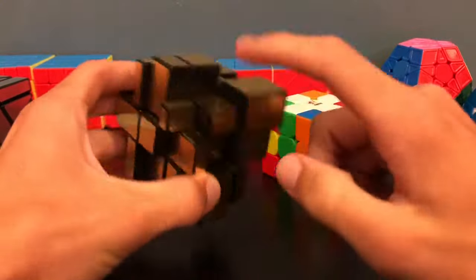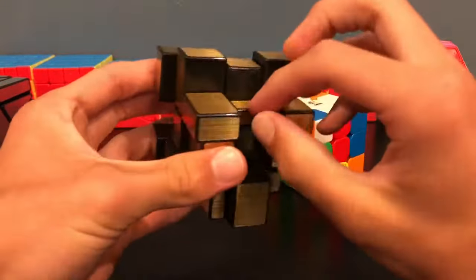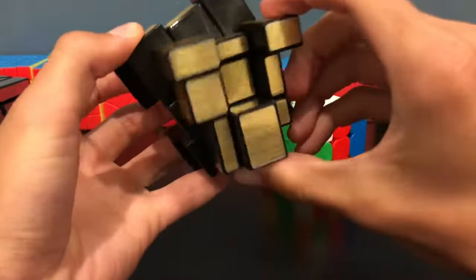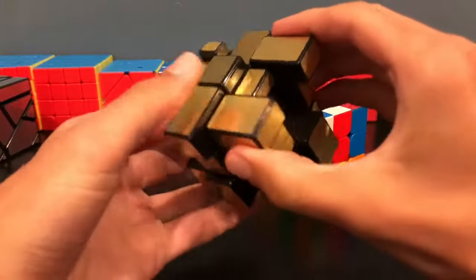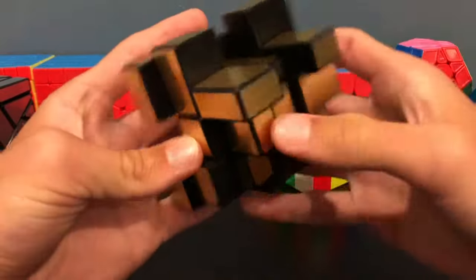But on the mirror cube, it's hard to tell which one of these centers is going to be the thinnest center. So what I do is find just any one of the thinnest edges. So here we found one of them. Now just move that thin edge around the cube until you find a center that it matches up with.